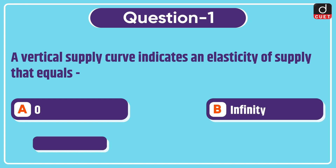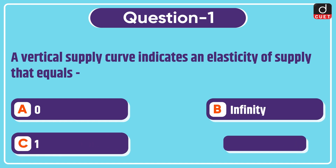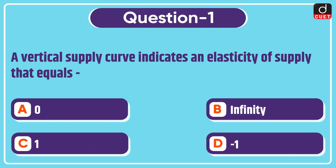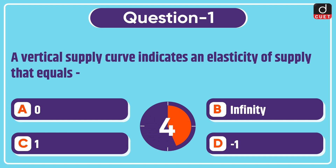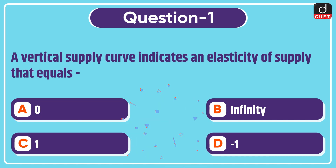First question is: a vertical supply curve indicates an elasticity of supply that equals 0, infinity, 1, or minus 1? The correct answer is option A, 0.